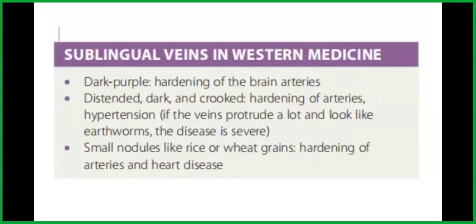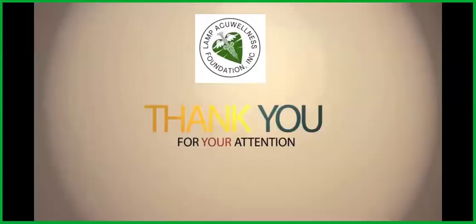Sublingual veins in Western medicine: dark purple indicates hardening of the brain arteries; distended, dark, and crooked indicates hardening of arteries and hypertension; if the veins protrude a lot and look like earthworms, the disease is severe; and small nodules like rice or wheat grains indicate hardening of arteries and heart disease.